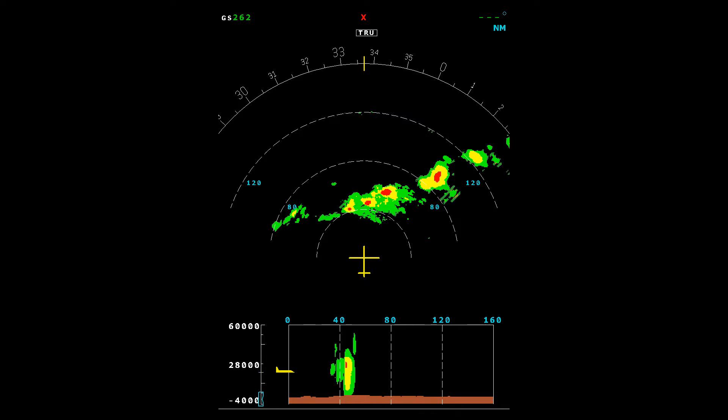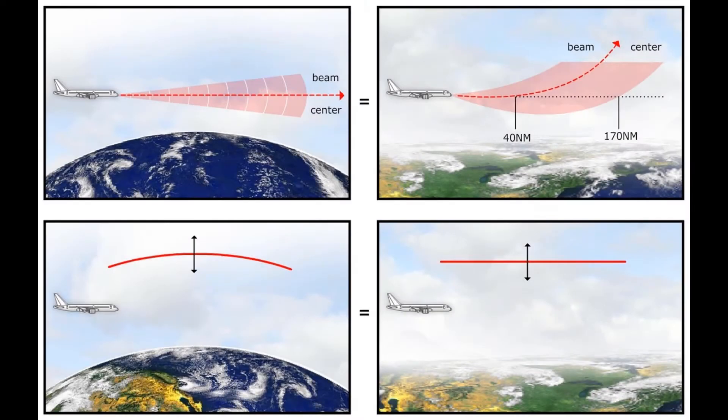Today, we're going to show you how to use constant altitude slices to analyze weather and make a deviation decision. Recall from our previous video that the data put into the 3D buffer is corrected for the Earth's curvature, and that's why they're called constant altitude slices. They are true MSL altitudes.